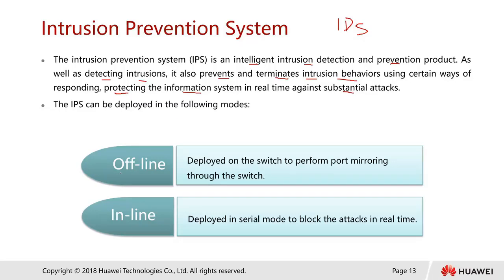IPS can be deployed in two modes: offline mode or inline mode. Offline mode doesn't mean the IPS system is offline — it means we ask the switch to perform port mirroring, so any traffic passing through the switch port sends one copy to the IPS. The IPS is not sitting in the middle of the traffic path between the firewall and the user. Inline means the IPS is deployed in between the traffic and performs real-time scanning.